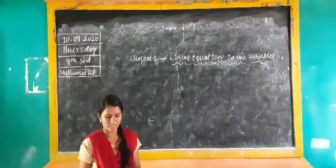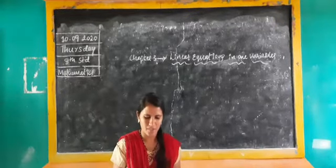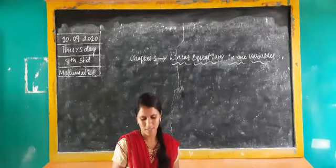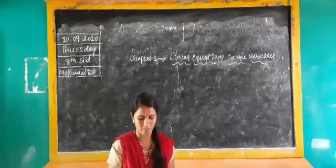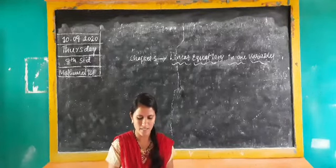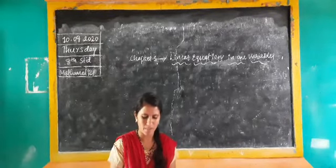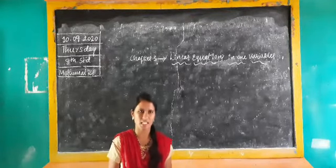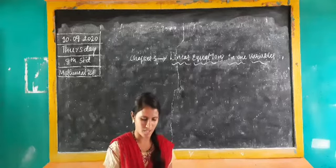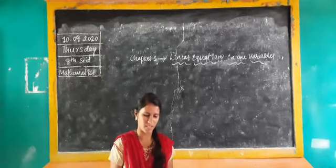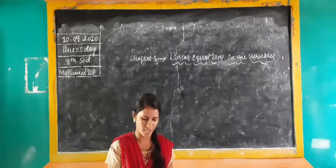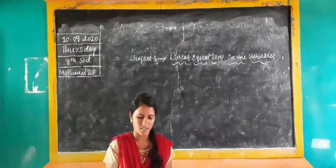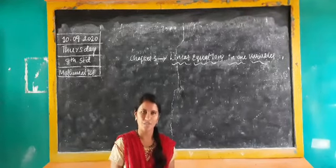You already know this. See page number 33 — here they have given the introduction part. In earlier classes you came across several algebraic expressions and equations: linear equations, quadratic equations, and cubic equations. Here they give examples like 5x, 2x minus 3, and 3x plus 5 — these are linear equations.